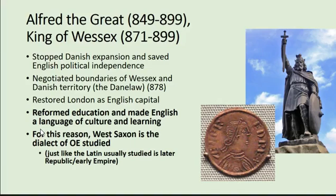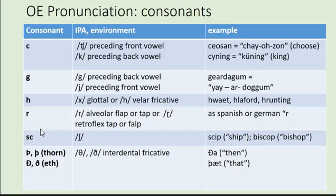So first of all, how do we pronounce it? Let's look at the consonants first, because there are some differences between Old English and Modern English pronunciation. One of the big differences is that the Old English writing system is actually fairly systematic, consistent, and predictable, unlike Modern English. Generally, just as with Spanish, German, or French, when you look at a word in Old English you can guess how it's pronounced — there's nothing like O-U-G-H where you don't know how to say it.